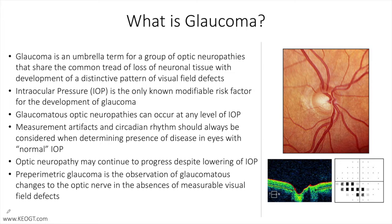Glaucoma is a general or umbrella term that we use to cover a group of diseases that share the common clinical picture of characteristic optic nerve cupping with distinctive patterns of visual field loss.